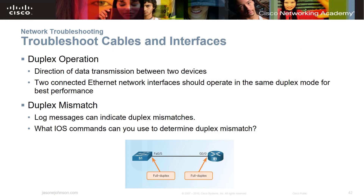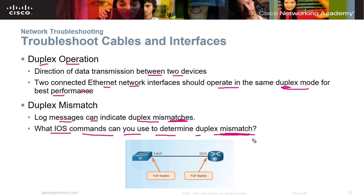When troubleshooting cables and interfaces, check duplex operation — the direction of data transmission between two devices. Sometimes you have full duplex on one side and half duplex on the other, which causes problems. Two connected Ethernet interfaces should operate in the same duplex mode for best performance. Log messages can indicate duplex mismatches, and there are IOS commands you can use to determine a duplex mismatch — check the reading for those.